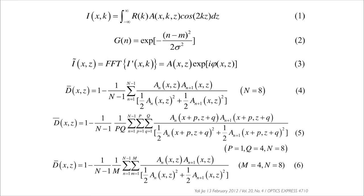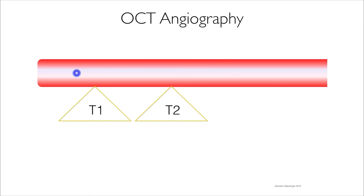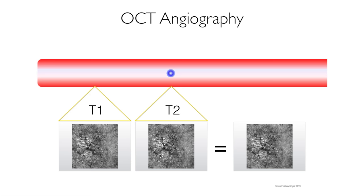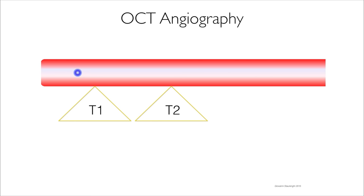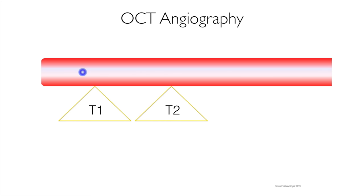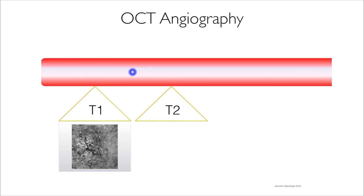What I understand from angio-OCT is that you have at least two time points - at least the commercially available instruments have only two time points. If you see something moving in the vessel at time one and time two, you get an image. If something is moving too fast, there is no image at either time point. But remember it can also be the opposite: too slow flow means you get an image at time one but not time two, and so you don't get an image.